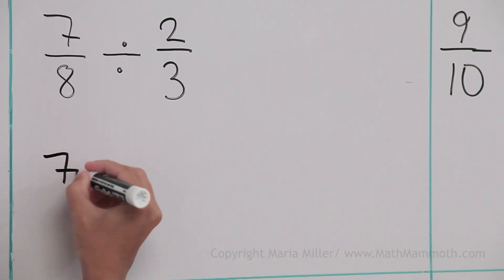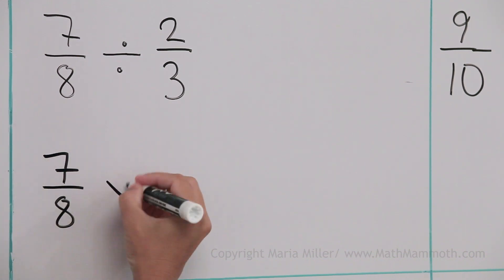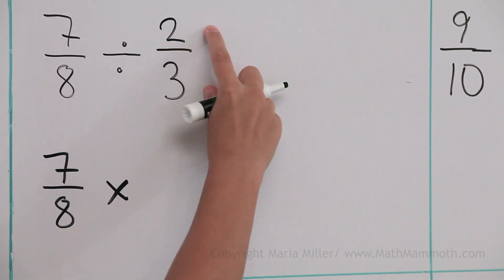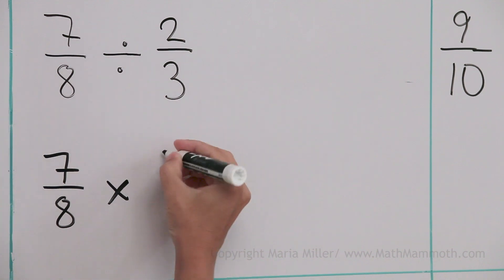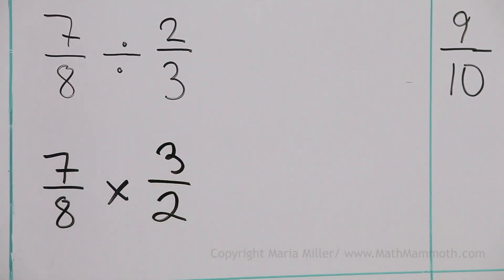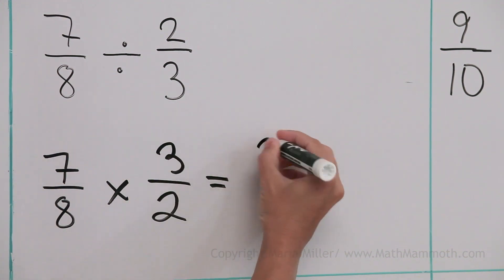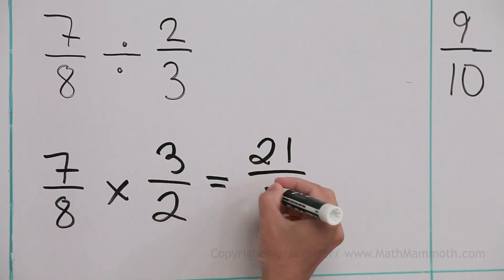And this is how it happens. I will write the 7 eighths. It won't change. The division changes into a multiplication. And then this number, I take its reciprocal. So, I flip it. Like that. And now, over here, we just multiply normally. 7 times 3 is 21. And this is 16.